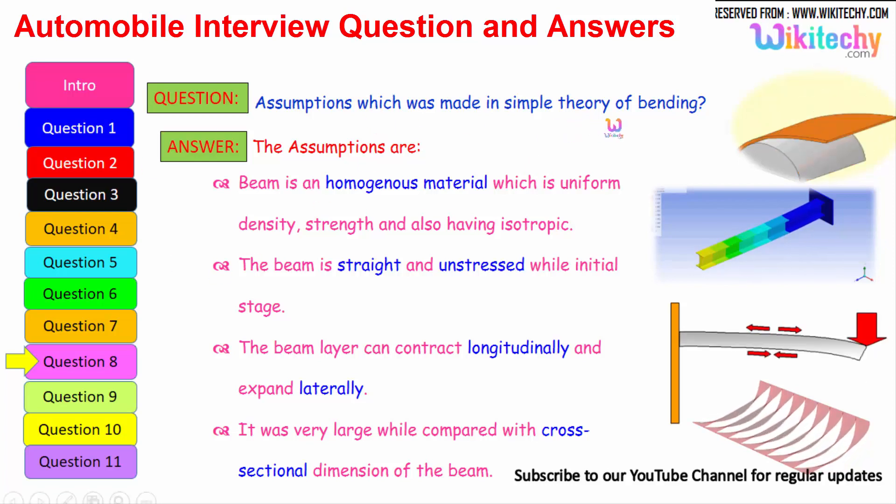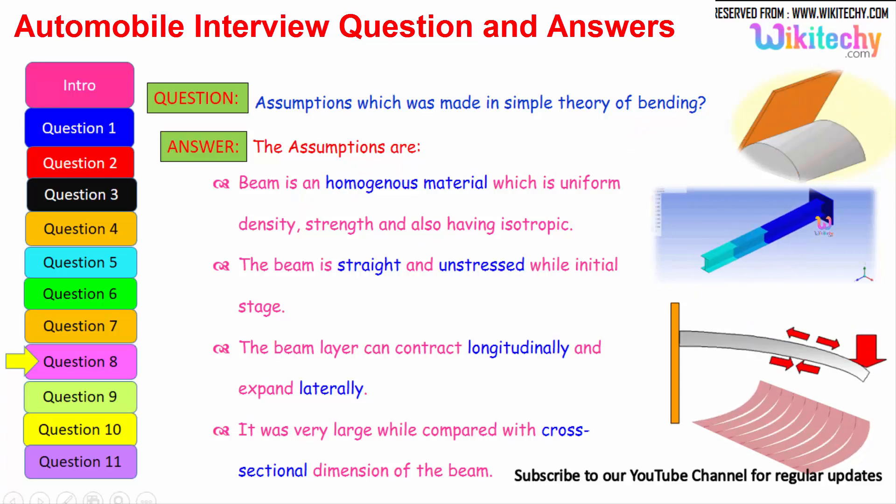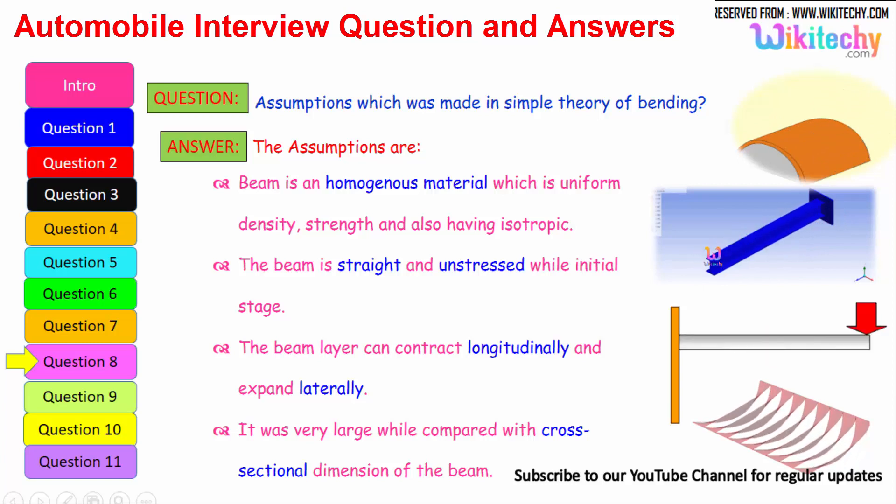What is the assumption which was made in simple theory of bending? That is the question. The assumptions are: beam is a homogeneous material which is uniform density. It should be uniform density, strength and also having isotropic. The beam is straight and unstressed while initial stage, that is the second assumption. The beam can contract longitudinally and expand laterally. It was very large when compared with the cross-sectional dimension of the beam. It should be very large when compared with the cross-sectional dimension of the beam. These are some of the assumptions we have to make for the theory of bending.